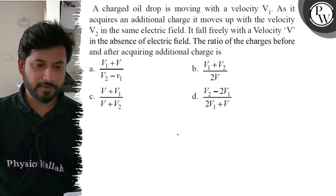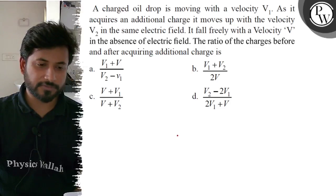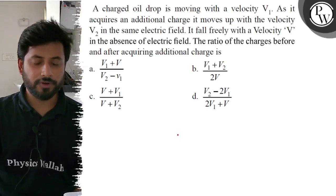Option A: V1 plus V divided by V2 minus V. Option B: V1 plus V2 divided by 2V. Option C: V plus V1 divided by V plus V2. Option D: V2 minus 2V1 divided by 2V1 plus V.